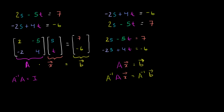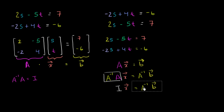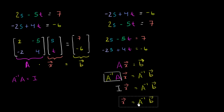Why is this interesting? We just said that A inverse times A, assuming A is invertible, equals the identity matrix. So that becomes the identity matrix times column vector x, equal to A inverse times b. And since the identity matrix times any matrix or vector is just that matrix or vector again, this simplifies to: column vector x equals the inverse matrix times the column vector b.